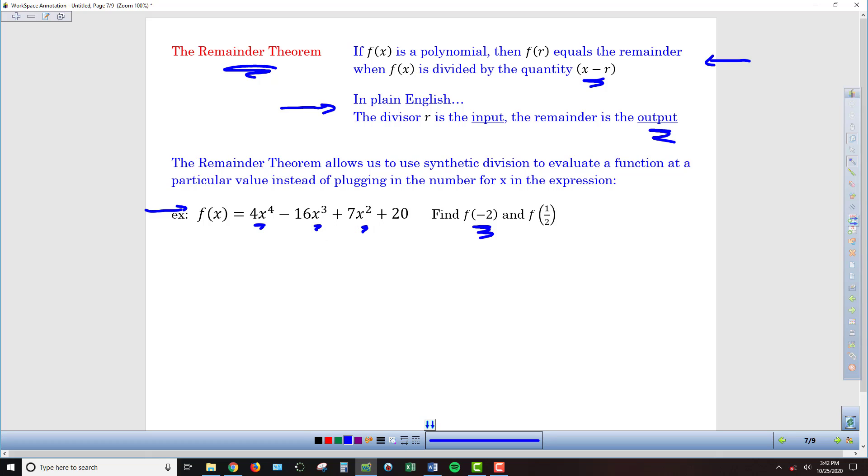multiply it by 4, raise it to the third power, multiply it by 16, raise it to the second power, multiply it by 7, and then add and subtract all those numbers together. Instead, we could use synthetic division. I think we're going to see that's going to be a little bit easier than having to go through what I just described.